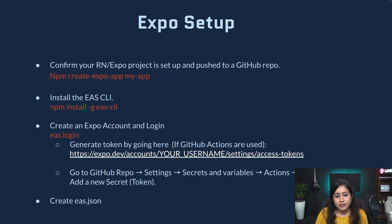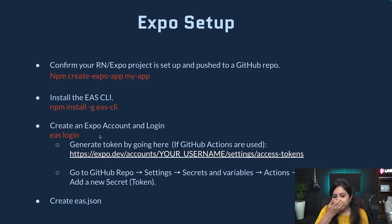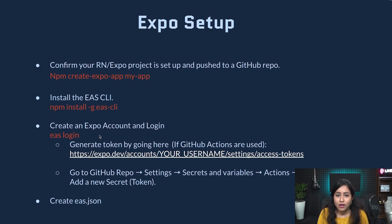Let's start the Expo setup by first creating the Expo project using the shown command. Or if you already have the Expo project set up, make sure the latest code is pushed into the GitHub repository. The next step is to install the EAS CLI globally. EAS is Expo Application Services — a tool developed by Expo to manage all its services like Expo build, Expo configure, Expo submit, etc. Log in to Expo.dev, create an account, and also log in with those credentials on the command line using EAS login. You also need to create an eas.json file at the root level of your project — it's a blueprint of the whole build process.